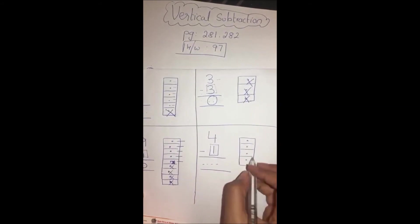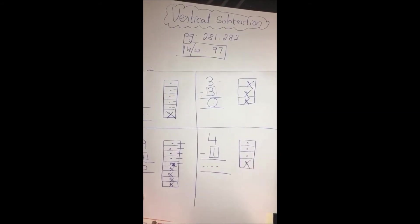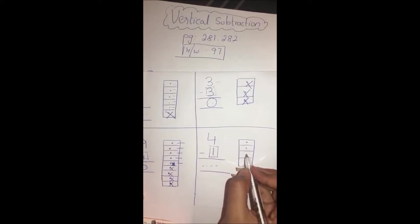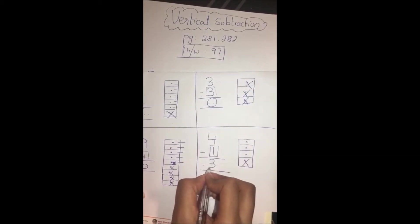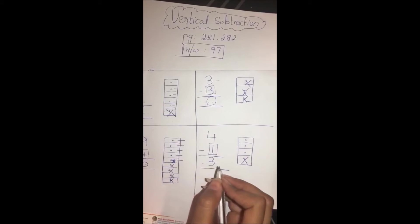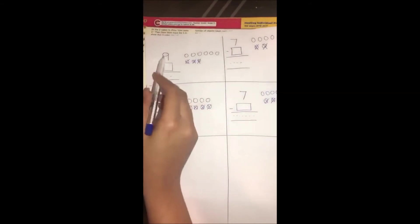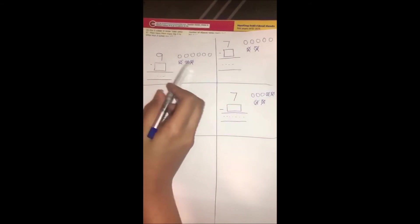Now here, 4 minus 1. How many are we going to take away? 1. In all, 4. We take away 1. How many left? 1, 2, 3. Yes, 3.